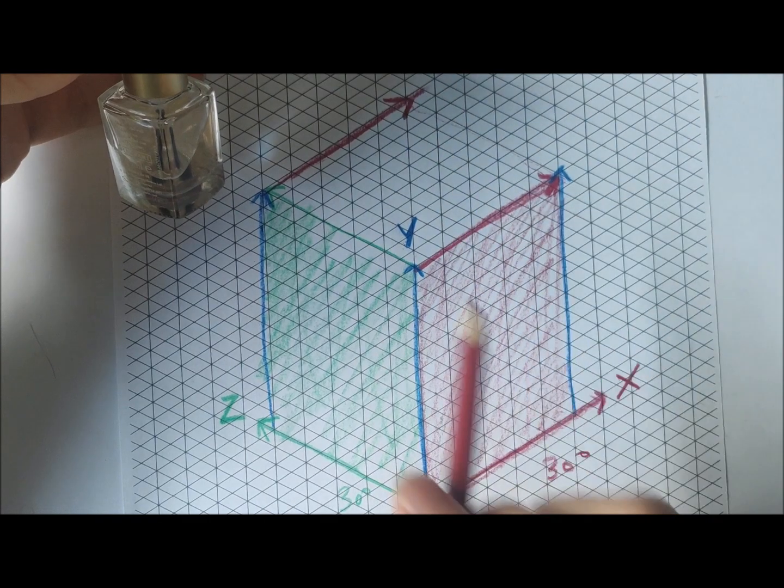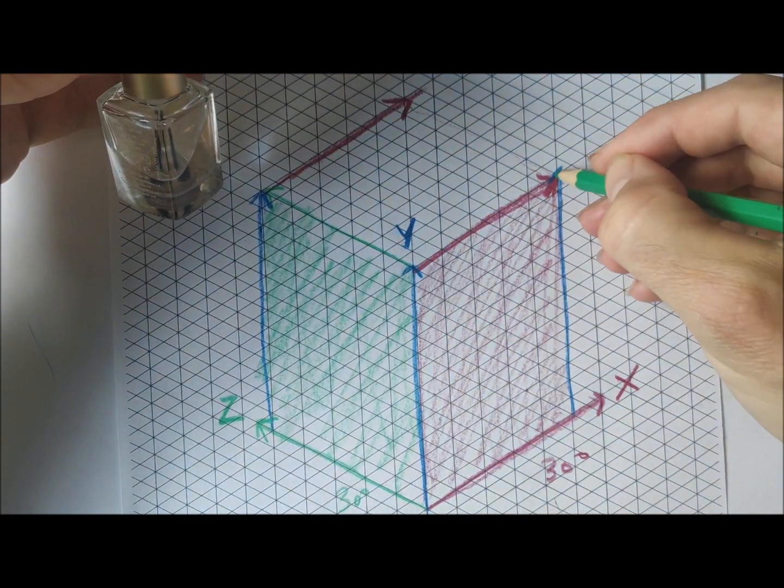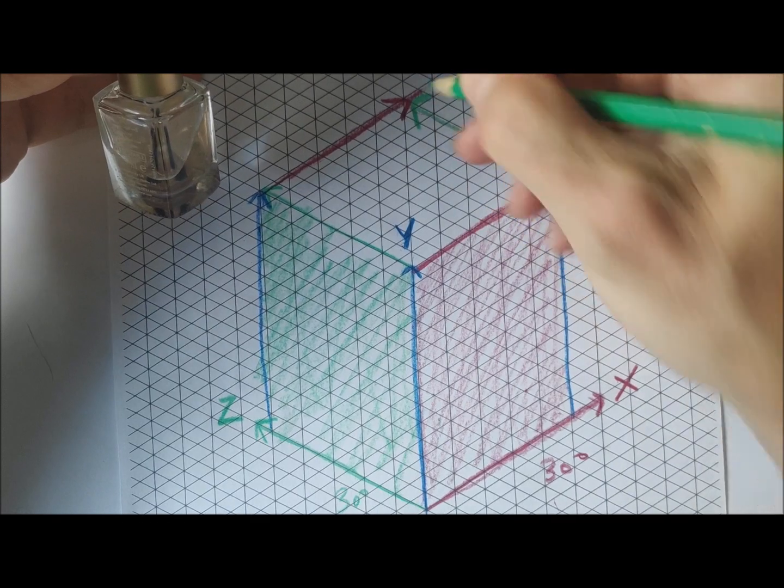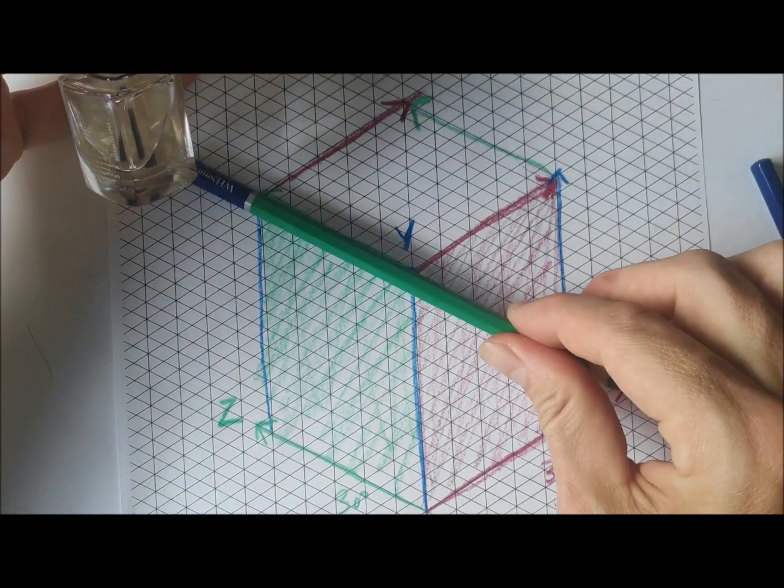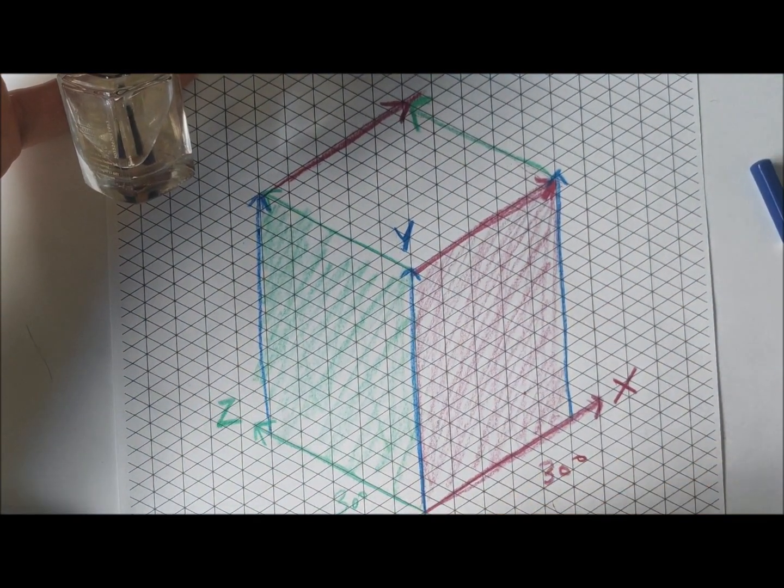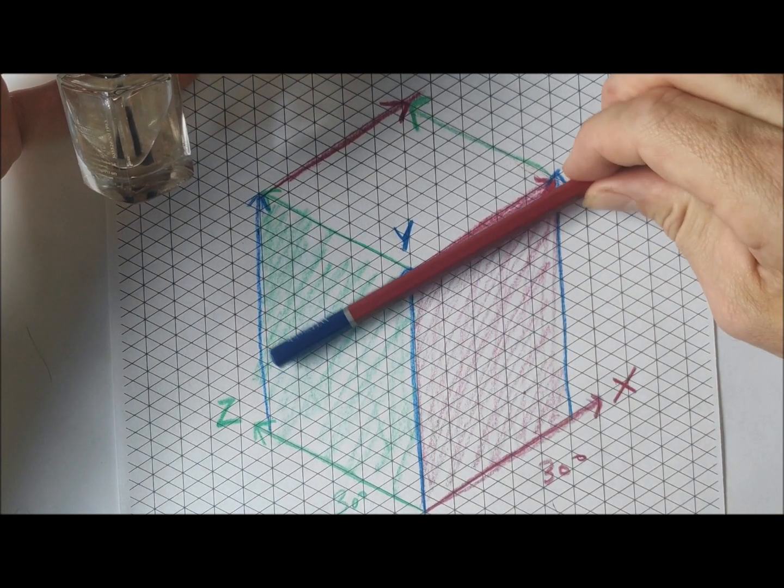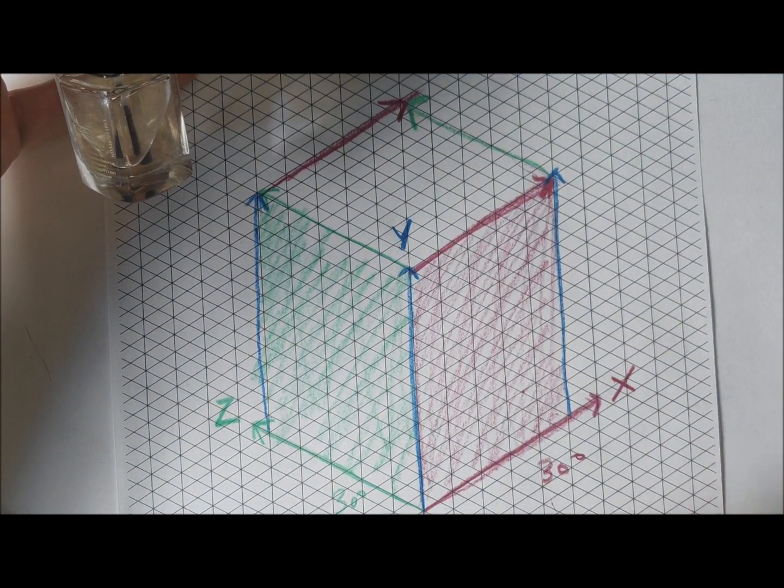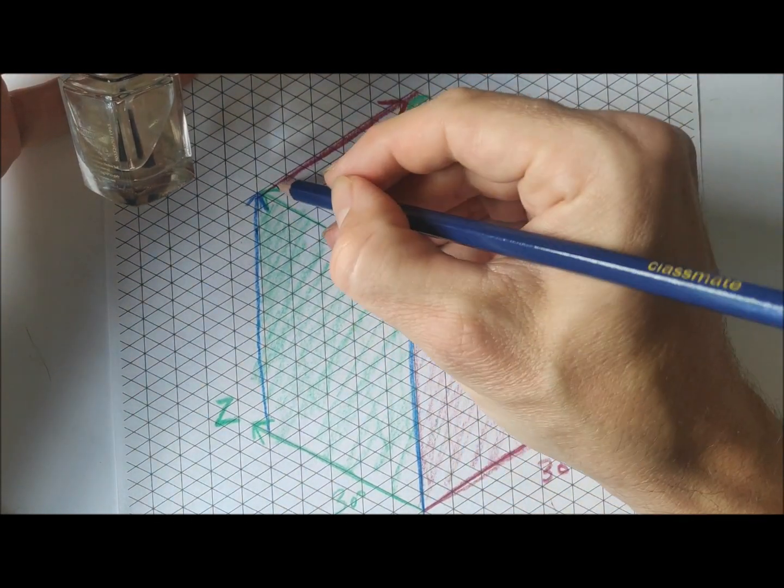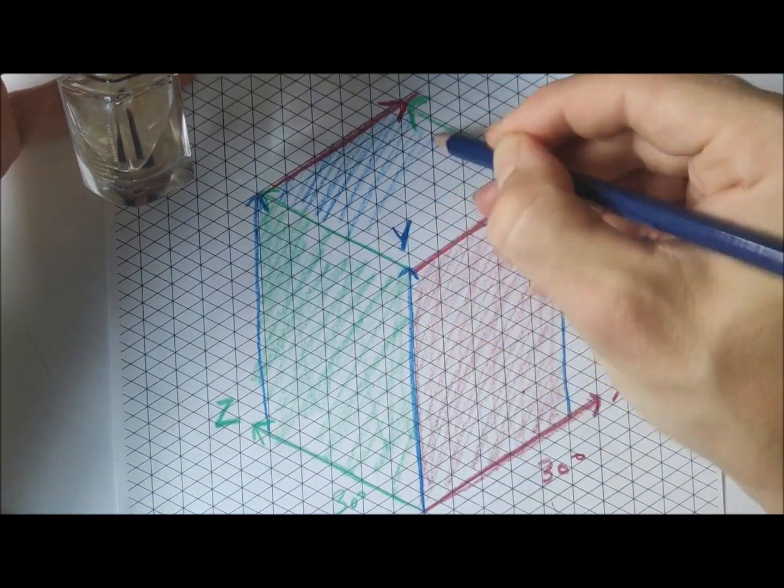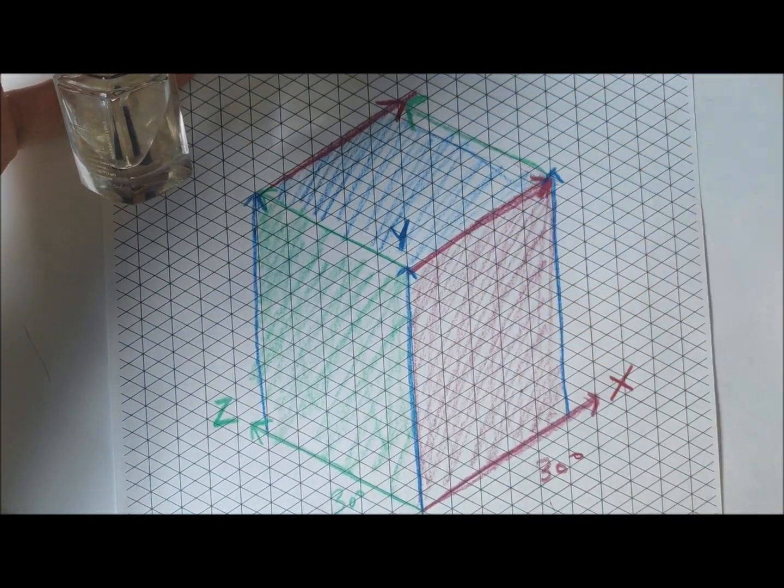And there's one line that's going off in this direction here. And what again you'll notice is that this line, this line, and this line are all parallel with each other, this line, this line, and this line are also all parallel with each other to complete the third plane, or surface, or elevation if you like, of my box that I've drawn.